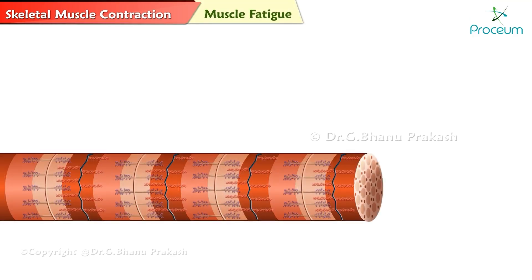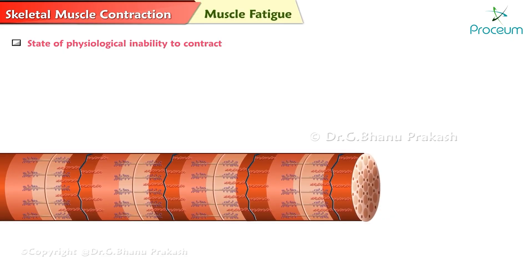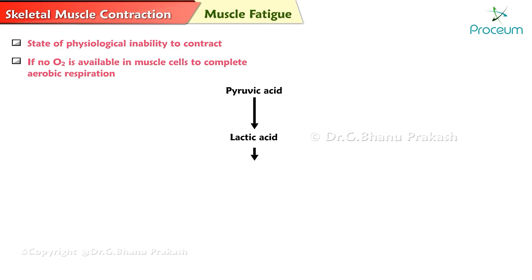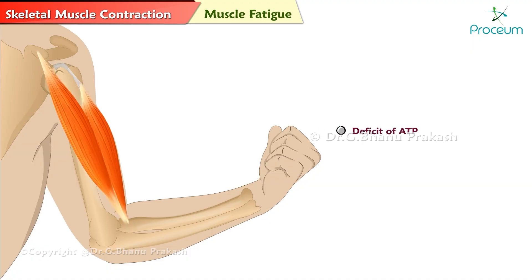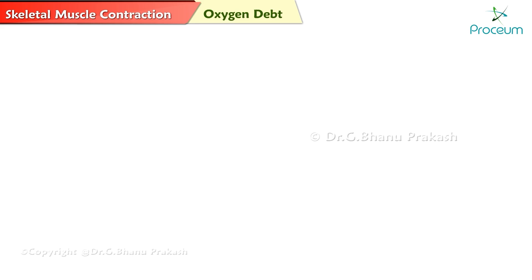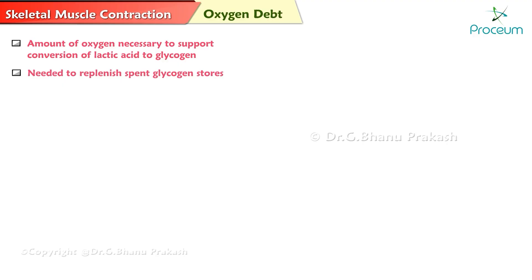Muscle fatigue is a state of physiological inability to contract. If no oxygen is available in muscle cells to complete aerobic respiration, pyruvic acid is converted to lactic acid, which causes muscle fatigue and soreness. Muscle fatigue results from a relative deficit of ATP and accumulation of lactic acid. Oxygen debt is the amount of oxygen necessary to support the conversion of lactic acid to glycogen, which is needed to replenish spent glycogen stores.